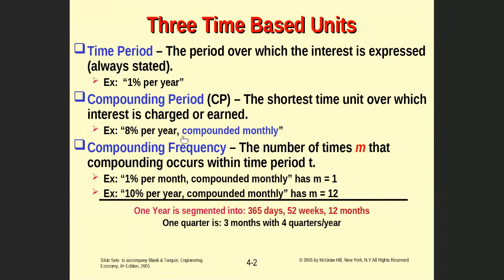If the compounding period is different from the time period, you must identify and state it — for example, '8% per year compounded monthly or weekly.' This means the percentage is applied monthly or weekly during the year, not at the end of every year. The compounding frequency is the relation between the compound period and the time period — how many times the compound period appears in the time period. How many months in a month? One. In a year? Twelve. Quarters in a year? Four. Weeks in a year? 52.